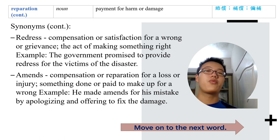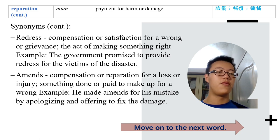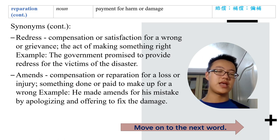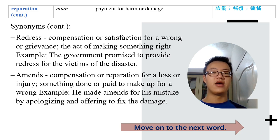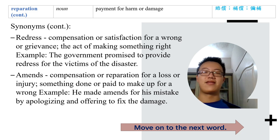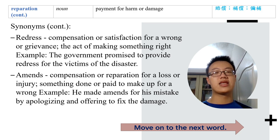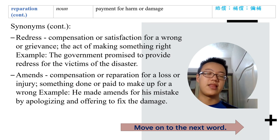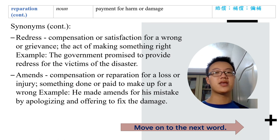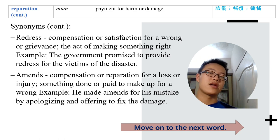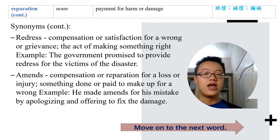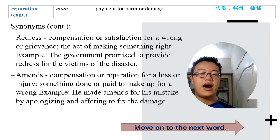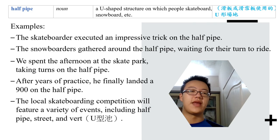'Amends' does not just mean the act of compensation — it can also refer to something done or paid to make up for a wrong. Wrong here is used as a noun, referring to things done incorrectly. Amends can refer to an act or to something given as reparation. He made amends for his mistake by apologizing and offering to fix the damage. The next word is 'halfpipe.'